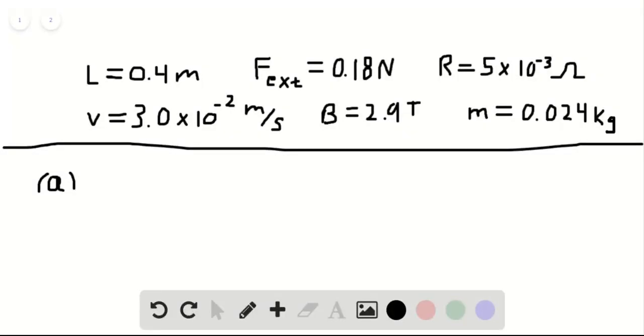For part 8A of our question, we're asked to find the acceleration of the loop when the velocity is equal to 3 times 10 to the minus 2 meters per second.